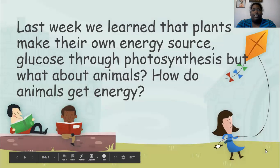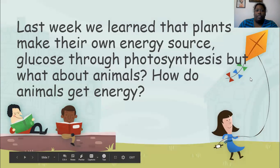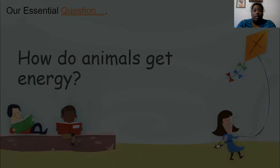An environment is all of the living and non-living things around an organism. More than one of the same type of organism is a population. A community would be two populations — for example, a whole lot of deer and a whole lot of bobcats. And an ecosystem would be all of the living and non-living things and their interactions. Last week we learned that plants make their own energy source, glucose, through photosynthesis. But what about animals? How do animals get energy? That is our guiding question.